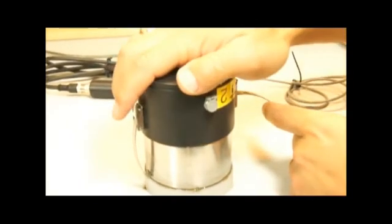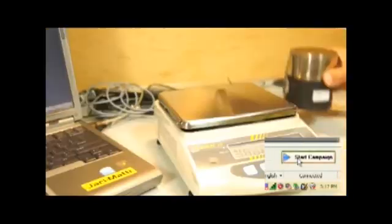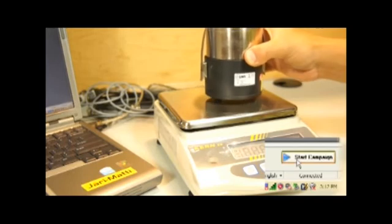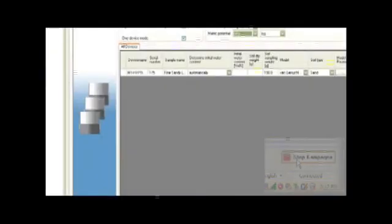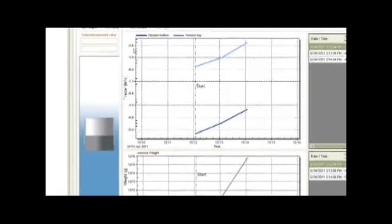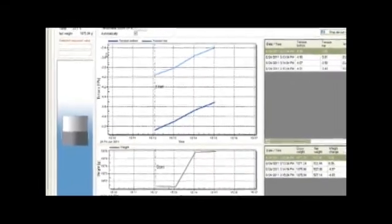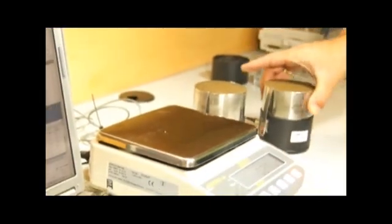You're ready to start the moisture release curve. Set the soil sample assembly on the tared balance. Now click on Start Campaign in TensioView. Let the HYPROP do the rest. A single moisture release curve takes between 2 days and 1 week to complete. Up to 20 samples can be run at one time using available extension kits. That's all you need to know to get started.